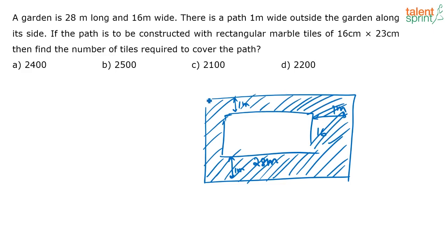Now what is the area of this bigger rectangle? This is 28 into 16. So what will be the length of this outer rectangle? Its length is going to be, you have 1 meter on this side extended 1 meter on this side. So it will be 28 plus 2, that is 30 meters.